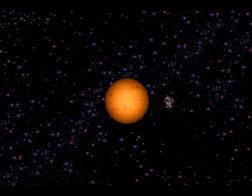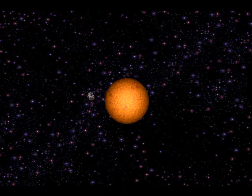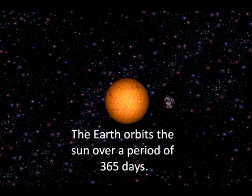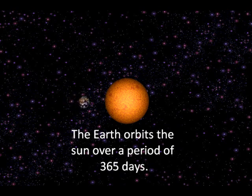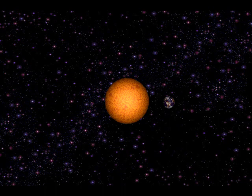The Earth, as well as all the other planets in our solar system, orbits the sun. It does this over a period of 365 days. To be exact, it is actually 365.25 days, which is why every four years we get a leap year.